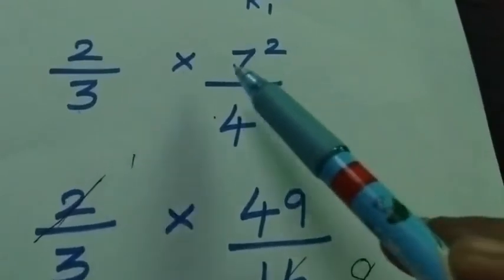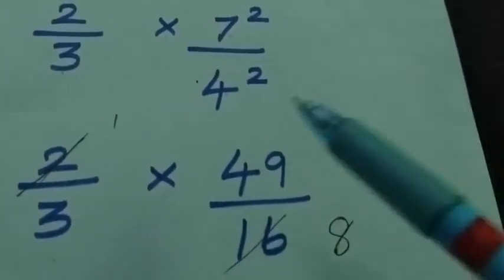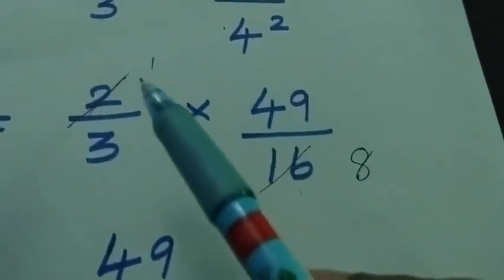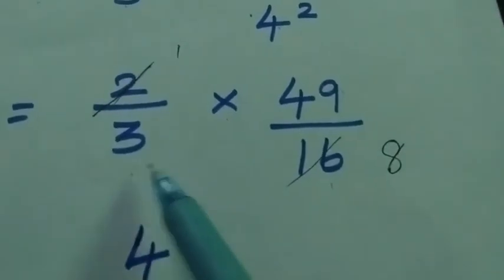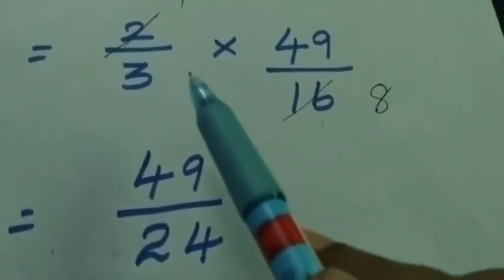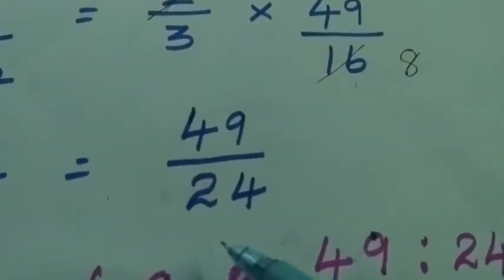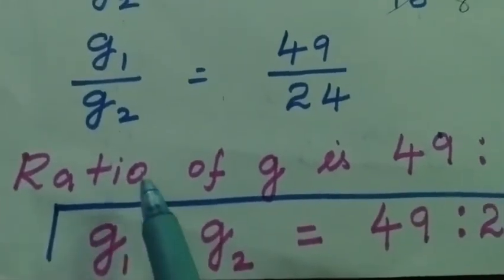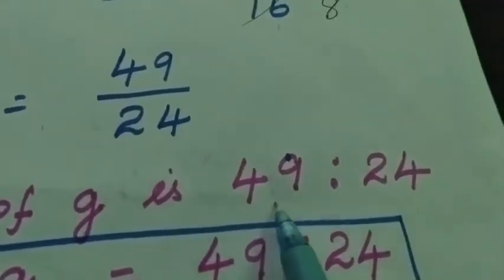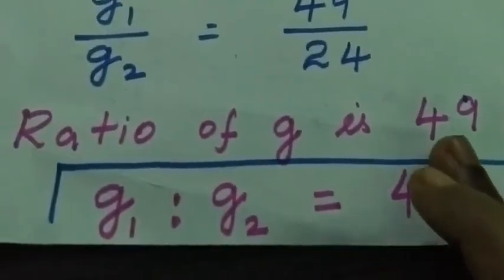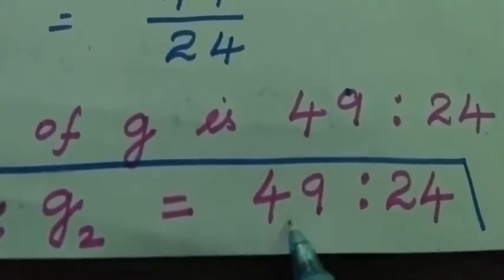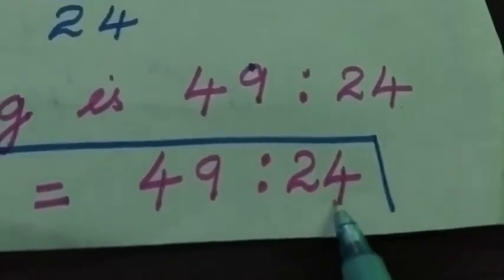So g1 divided by g2 equal to 2 by 3 into 49 by 16. Simplifying: 2 and 16 cancel to give 1 and 8, so we get 1 into 49 divided by 3 into 8 equal to 49 divided by 24. So the ratio of acceleration due to gravity g1 to g2 is 49 is to 24.